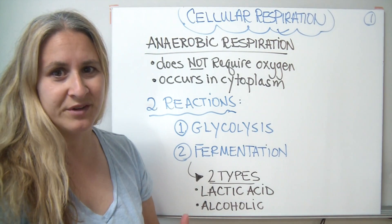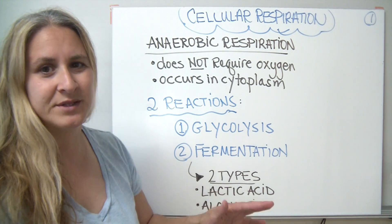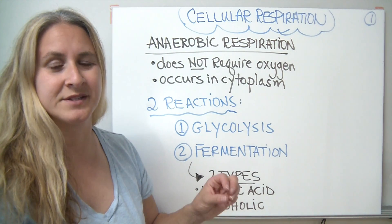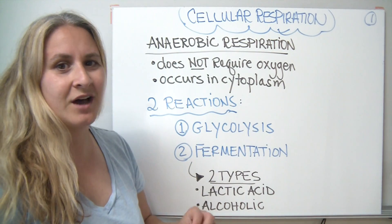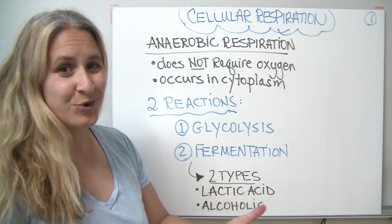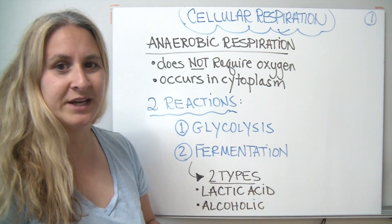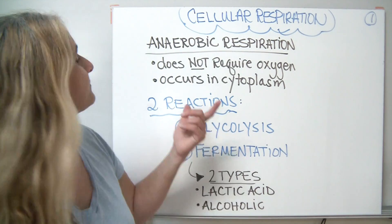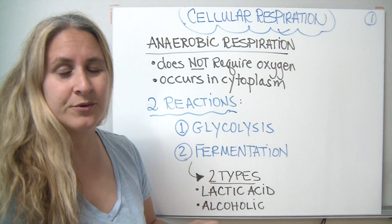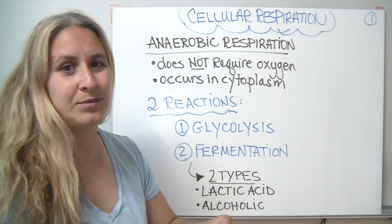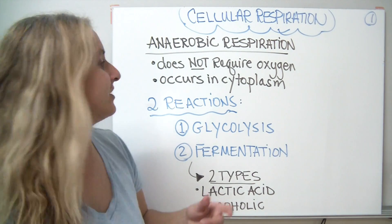Anaerobic respiration is a little more simplified and it typically happens in simpler organisms, not as much in complex organisms. Anaerobic respiration does not require oxygen, so organisms living in a very oxygen-poor environment can still manage to get energy from their food sources. This occurs in the cytoplasm, which is also suitable for simple organisms that don't have complex structures such as mitochondria in order to carry out aerobic respiration.